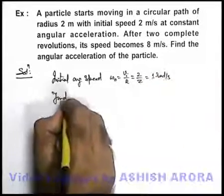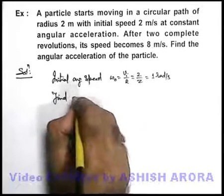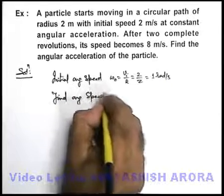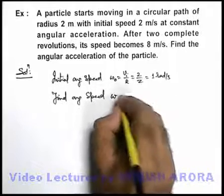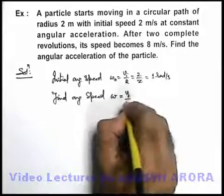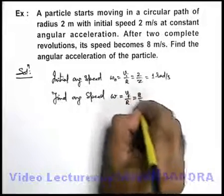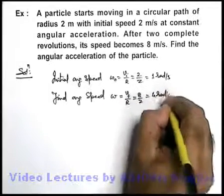If we calculate the final angular speed after 2 revolutions, it can be written as v final by r, that will be 8 by 2. It is 4 radians per second.